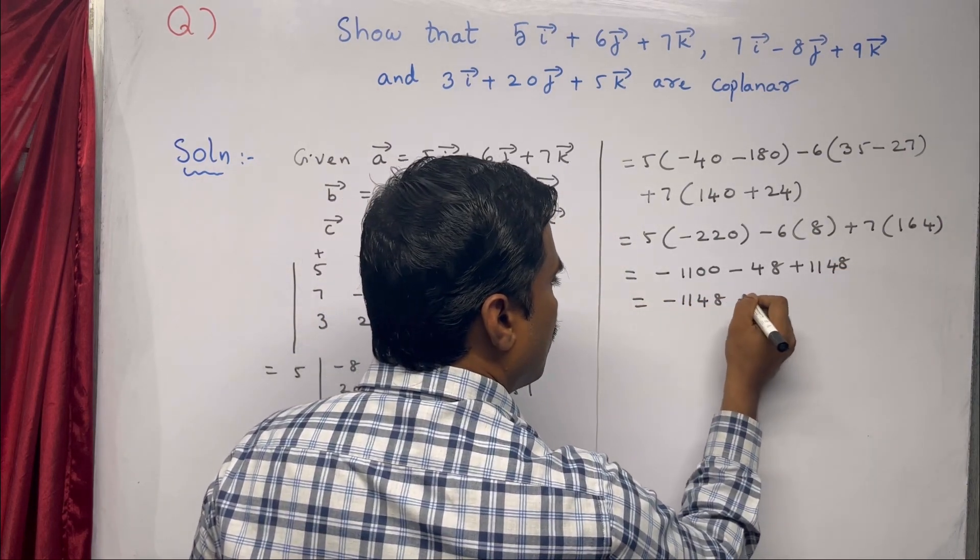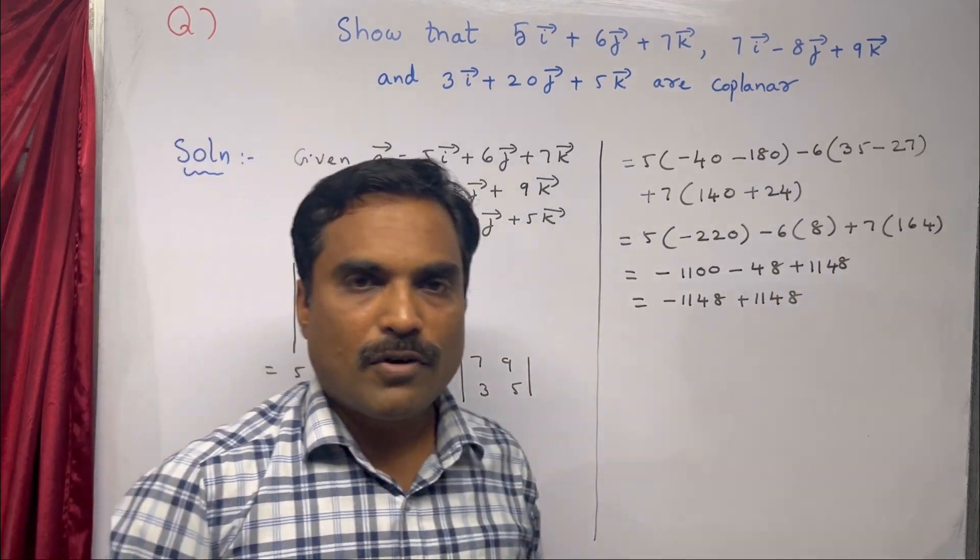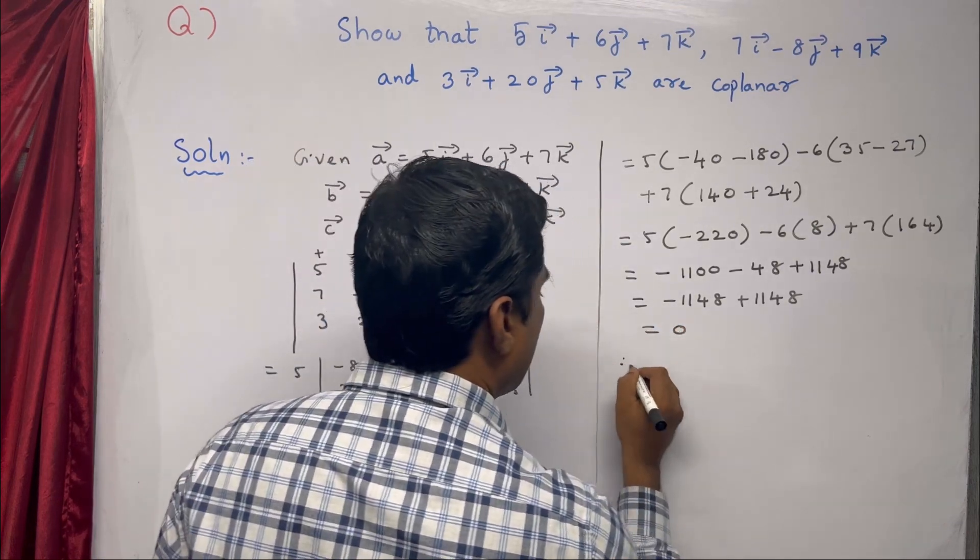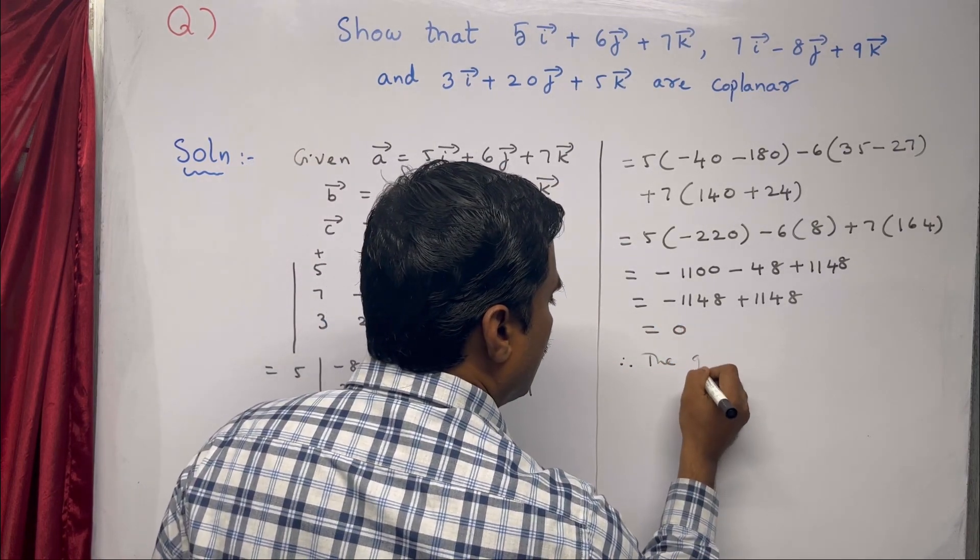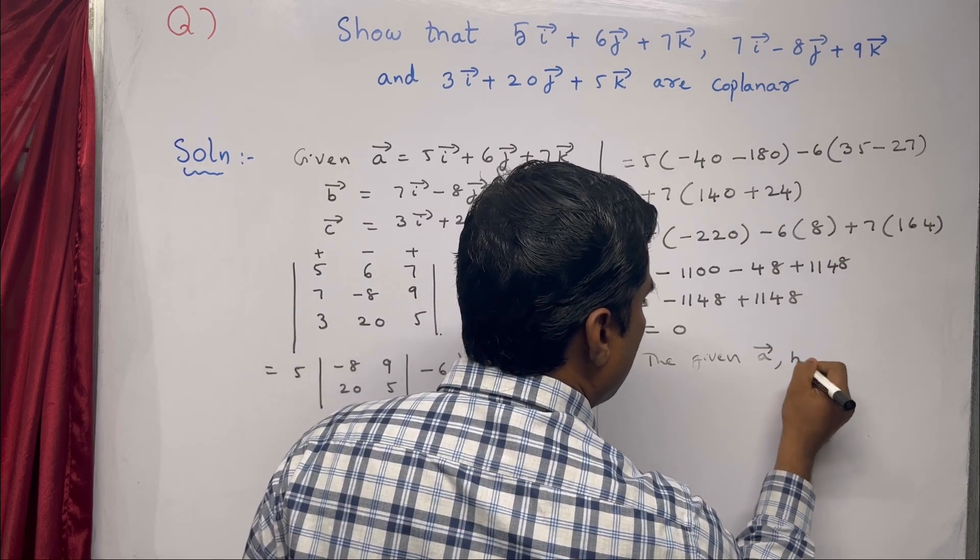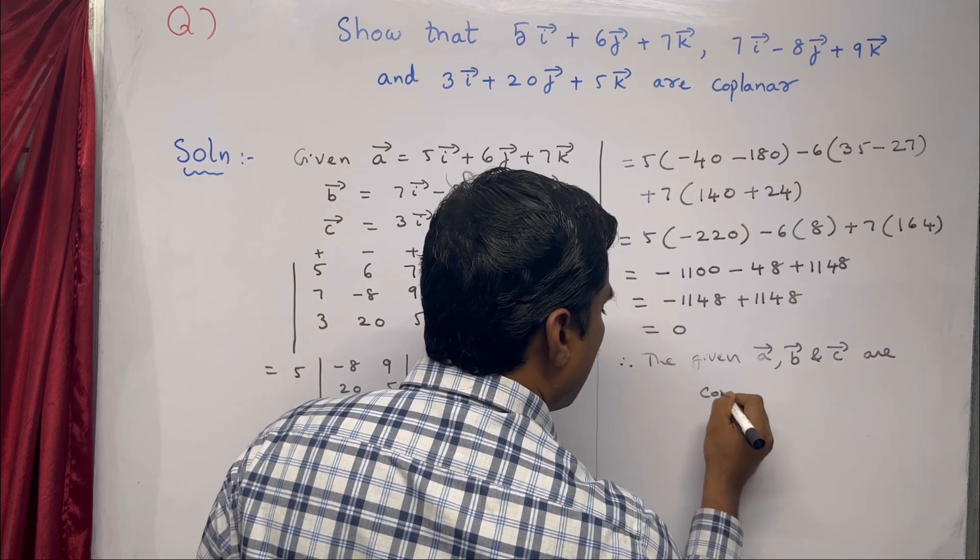Therefore, the given three vectors â, b̂, and ĉ are coplanar. This is how we solve this problem.